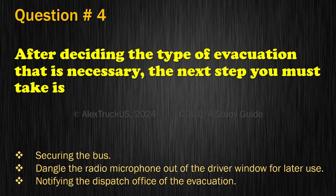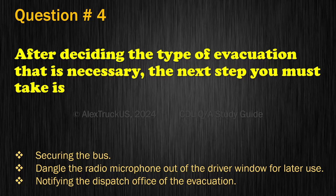Question 4. After deciding the type of evacuation that is necessary, the next step you must take is: Securing the bus; Dangle the radio microphone out of the driver window for later use; or Notifying the dispatch office of the evacuation. The correct answer is: Securing the bus.